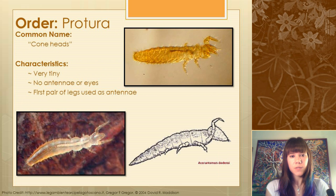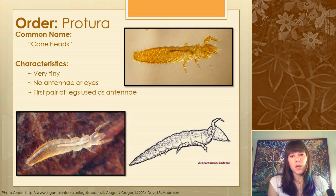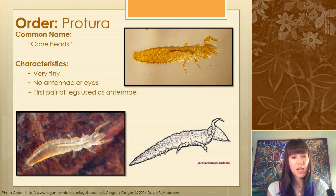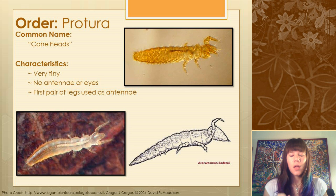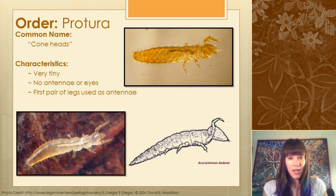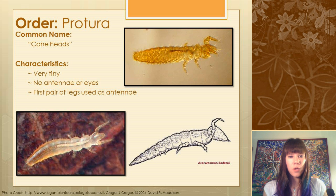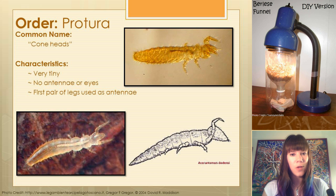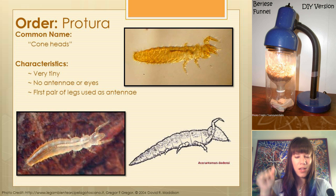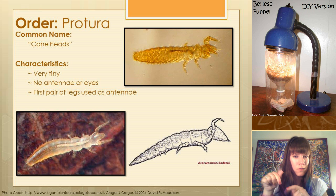The first order is Protura, and its common name is Coneheads. Their characteristics are that they're very tiny. They have no antennae or eyes and they use their first pair of legs like antennae. You're probably not going to see these guys — they're incredibly tiny and they live in leaf litter. About the only way to collect them is with a technique called a Berlese funnel, and there's a link to what that is and how to use it.